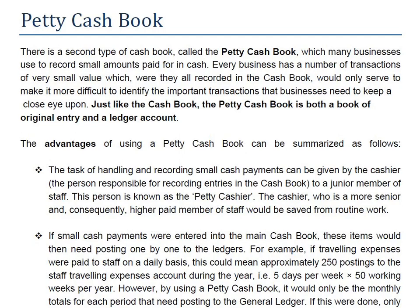Let us discuss some differences between a cash book and a petty cash book. A cash book contains both cash and bank columns. In a two-column cash book there are two columns — one for cash and one for bank — but in a three-column cash book there is an extra column for discounts: discount allowed on the debit side and discount received on the credit side. So a cash book deals with cash, bank, and discount columns, whereas a petty cash book only deals with petty cash.